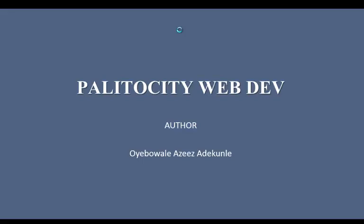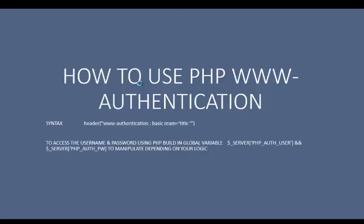Hi guys, welcome to my video. Today we're going to be looking at a very important header: the HTTP WWW-Authentication header. This header is very important when we want to restrict users from accessing a particular page on our website. This can also be coded using .htaccess, but for those who want to use PHP to restrict users, there's this WWW-Authentication header. What it does is prompt the user for a username and password when they access that particular page.